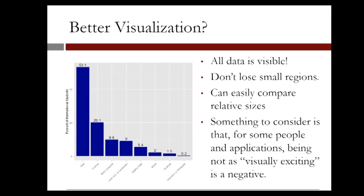We just made this plot in ggplot2. When we compare it back to the pie graph, the first thing I notice is that now all the data is visible. We haven't lost the small regions, and we can read out the exact share that comes from Africa, Oceania, and the unknown or stateless column. It is also easier to compare the relative sizes of each region, because they're all put side by side on a similar scale — there are no tricks of three dimensions or colors to create a perception issue.